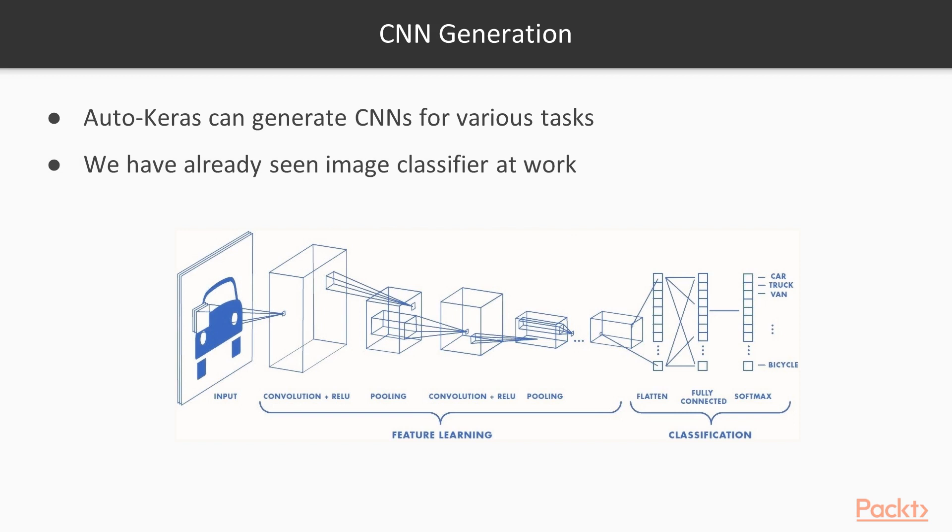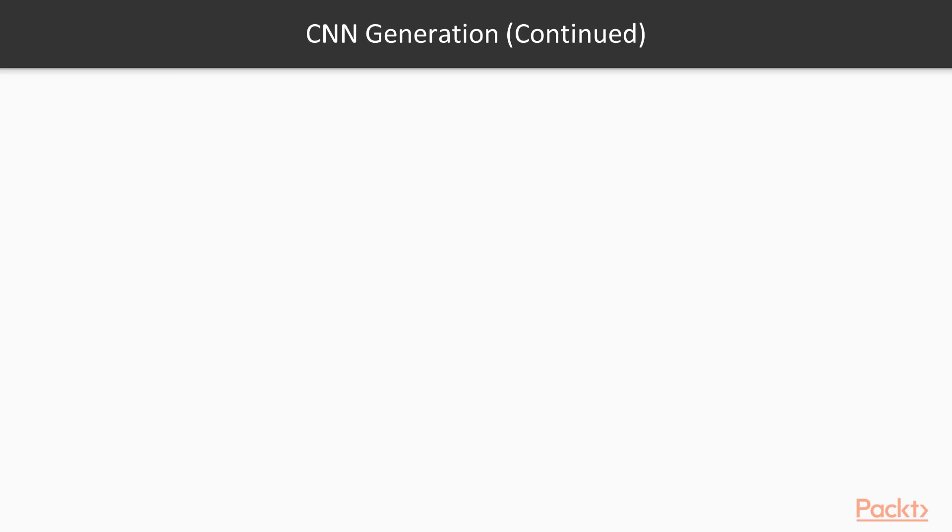We've already seen the image classifier at work in the previous sections. In the previous section we made it work with a multilayer perceptron. In this section we will see how we can make it work with our own convolutional neural network.